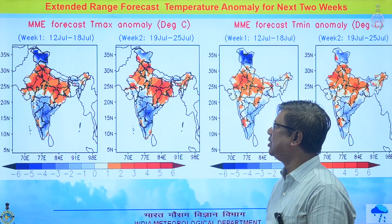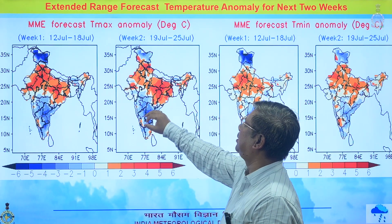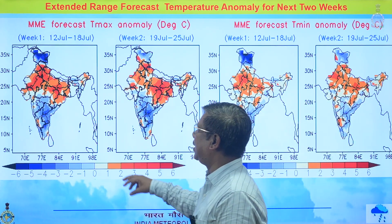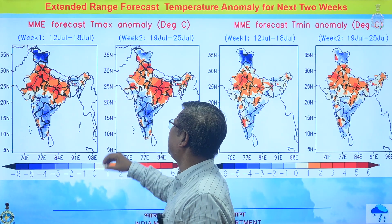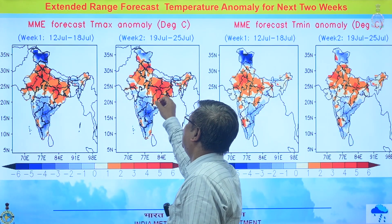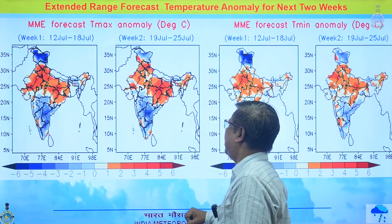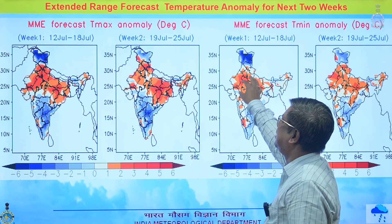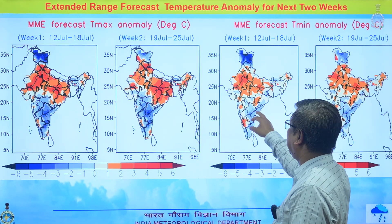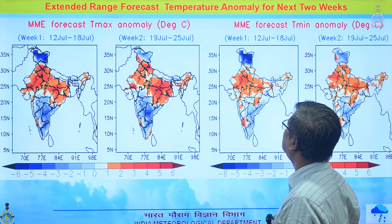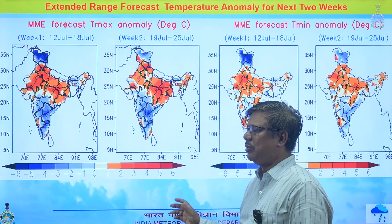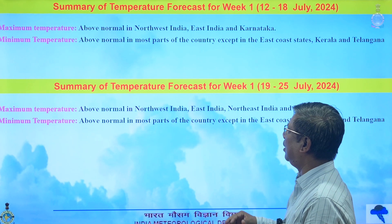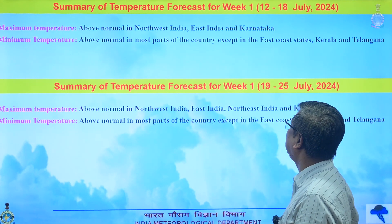For the temperature scenario over the two weeks, the maximum temperature anomaly for week one and week two shows red spots indicating positive anomaly and blue regions indicating negative anomaly. The same regions show positive anomaly in week two as well. For minimum temperature, the positive anomaly covers most parts of the country. Maximum temperature will be above normal over northwest India, east India, and Karnataka region.